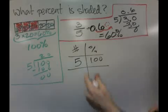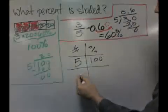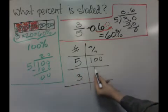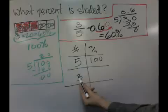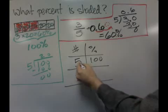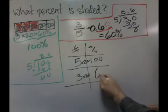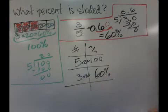And then we don't want 5 as being shaded, we want 3 as being shaded. And we need to figure out, if 5 is 100%, then what is 3? Well, you could say 5 times 20 is 100, 3 times 20 is equal to 60, and you are officially done.